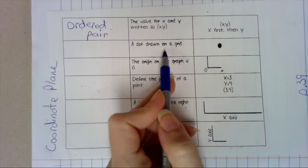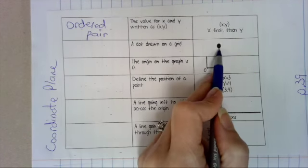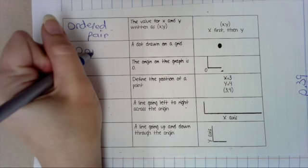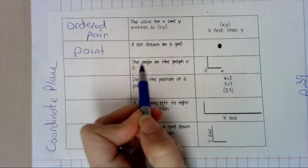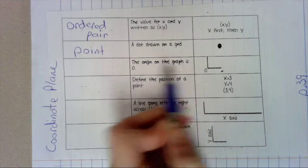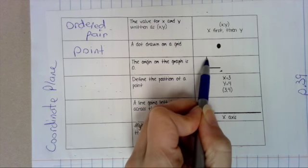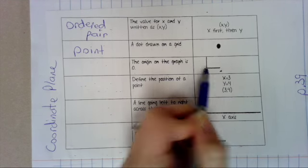A dot drawn on a grid, a dot like that, is called a point. The origin on the graph is zero. So where the zero is, the starting point, that is called the origin.